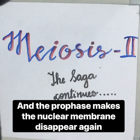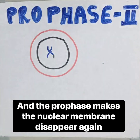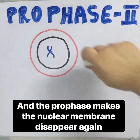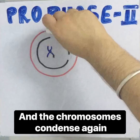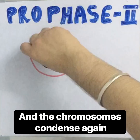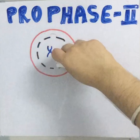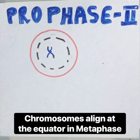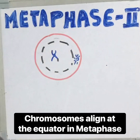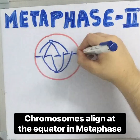Meiosis two begins, and prophase two makes the nuclear membrane disappear again and the chromosomes condense again. Chromosomes align at the equator in metaphase two.